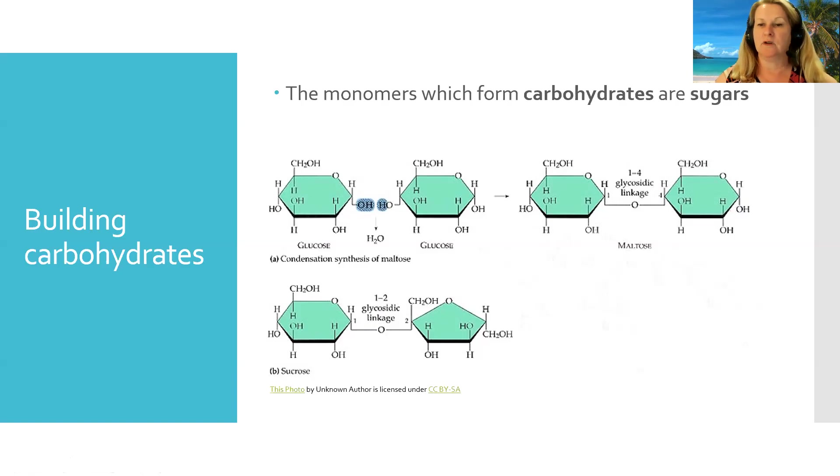And that linkage in a carbohydrate is called a glycosidic linkage. So sugars are joined together to form carbs. Sugars are the monomers that form carbs.